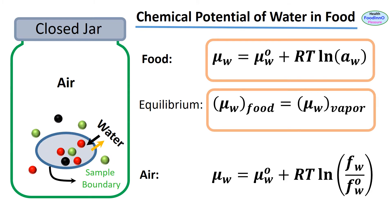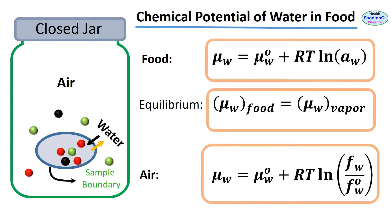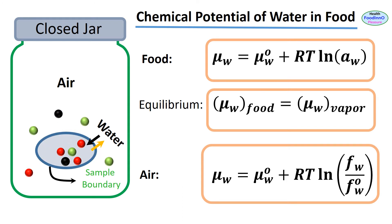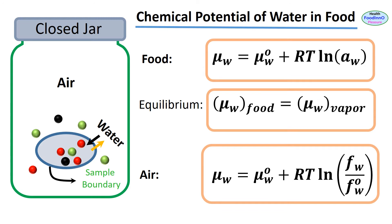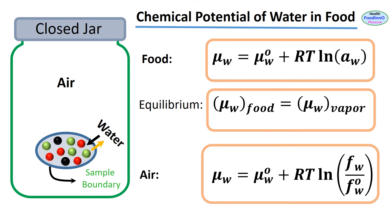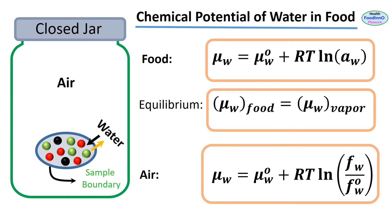The chemical potential of water in air can be written as μw = μw° + RT ln (Fw / Fw°), where Fw is the fugacity or escaping tendency of water in food, and Fw° is the escaping tendency of pure water.